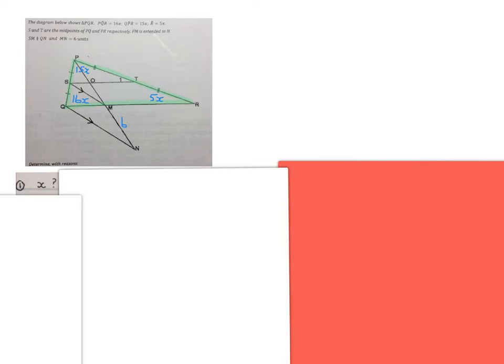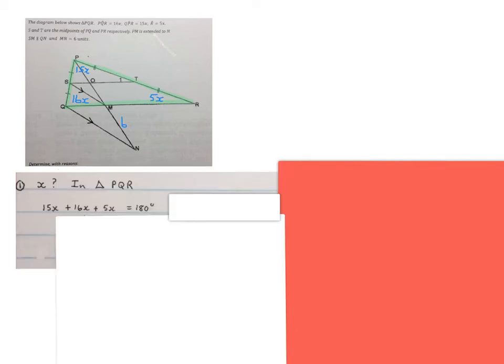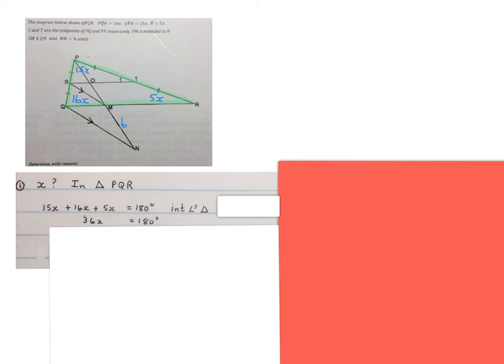The first thing they asked us to calculate with reasons is the value of X. First we can say in triangle PQR, the green one, 15x plus 16x plus 5x equals 180 degrees. Our reason will be interior angles of a triangle. Then we can write 36x equals 180 degrees, so X equals 5 degrees if you divide by 36 on both sides. Please stop the video and get your brain around this part.